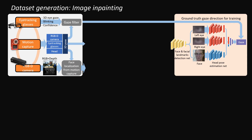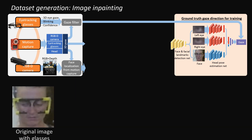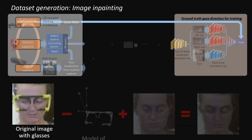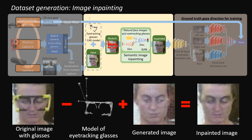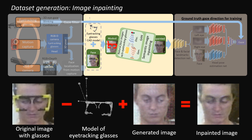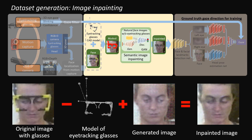While our system provides accurate gaze annotation, the eye tracking glasses introduce the problem of unnatural subject appearance. We propose to in-paint the area covered by the eye tracking glasses using a subject-specific generative adversarial network to remove some discrepancy between training and testing data.